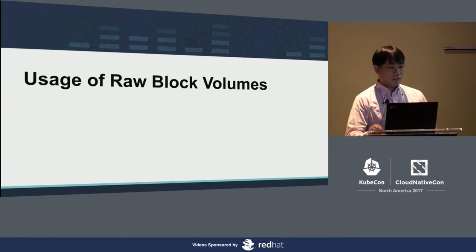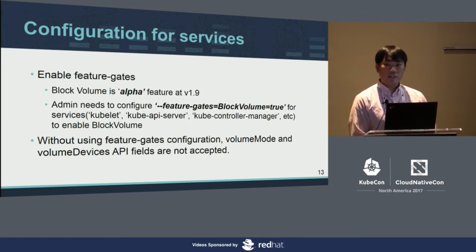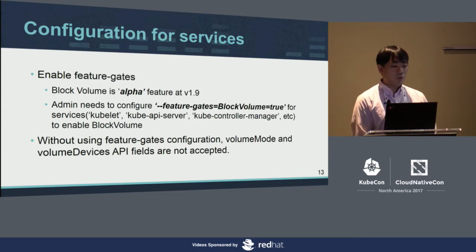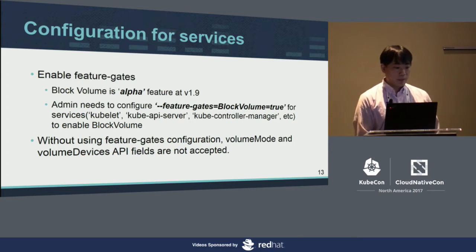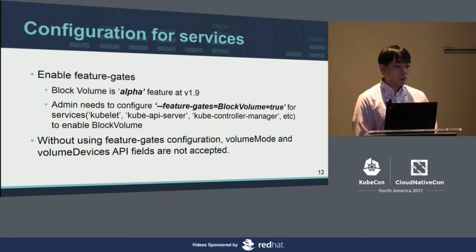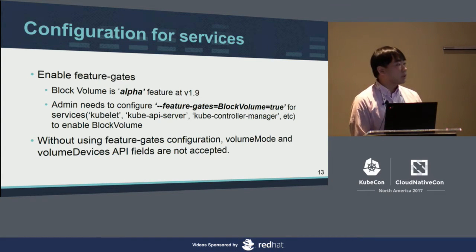Let me explain the usage of the raw block volumes feature. This is an alpha feature at v1.9. In order to use it, the admin needs to configure `--feature-gates=BlockVolume=true` for services such as kubelet, kube API server, kube controller manager, etc. Without the feature gate configured, the `volumeMode` and `volumeDevices` API parameters are not accepted in persistent volume claim or persistent volume definitions.